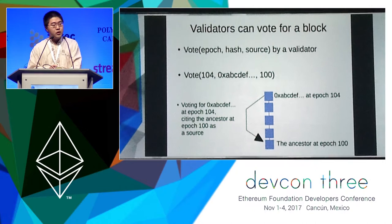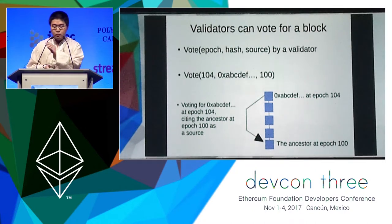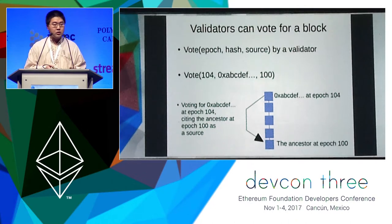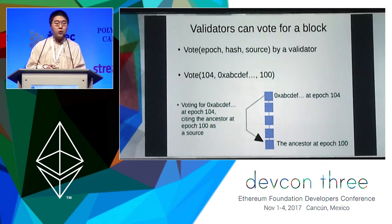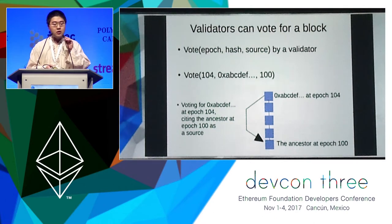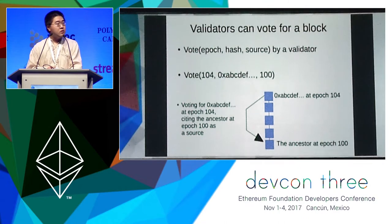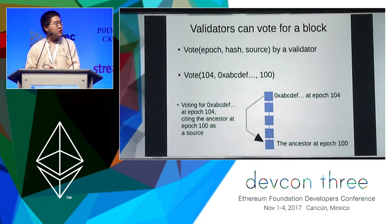A validator can vote for blocks. The voting message contains a network — a number like 104 — a hash of the block that's being voted for, and another number called the source of the vote, which is used as a justification for the vote.